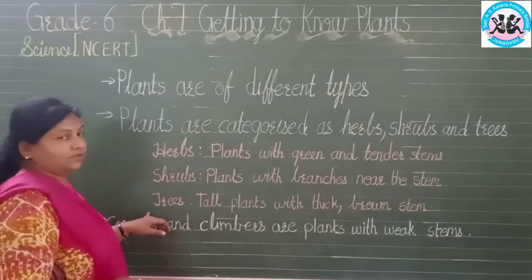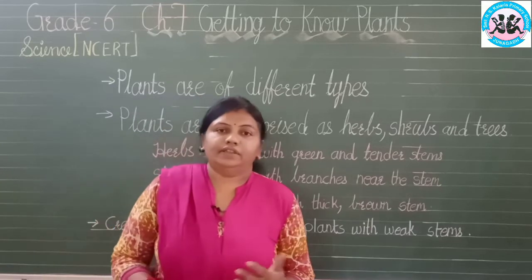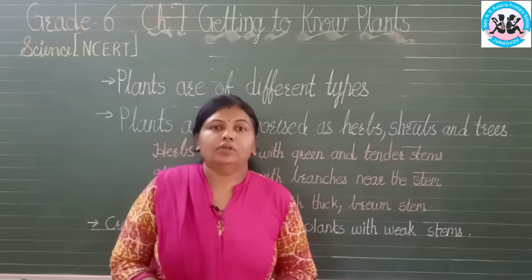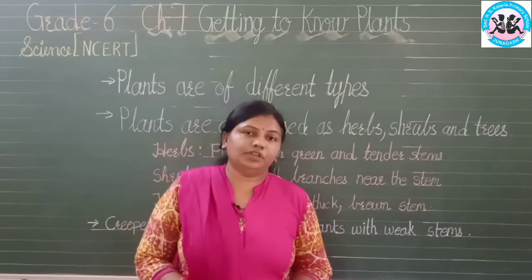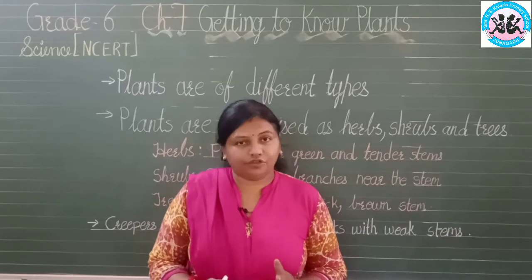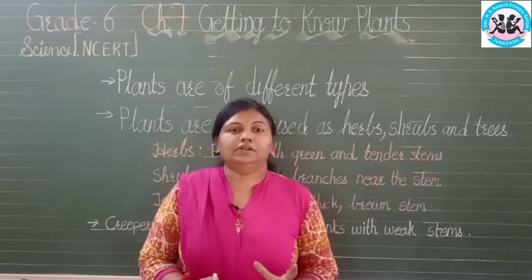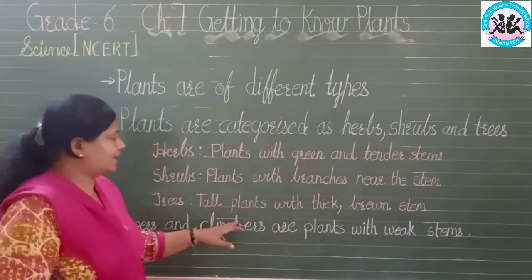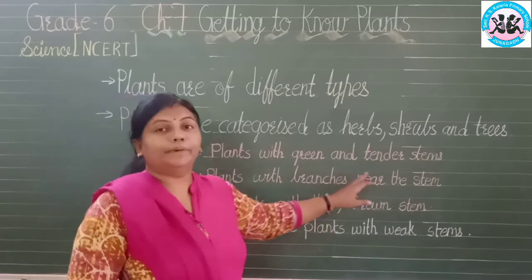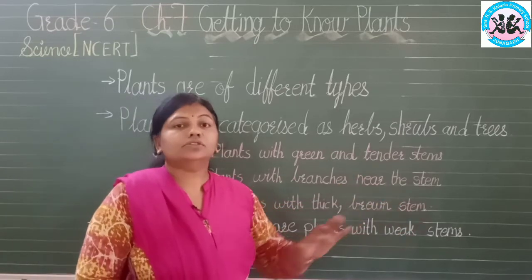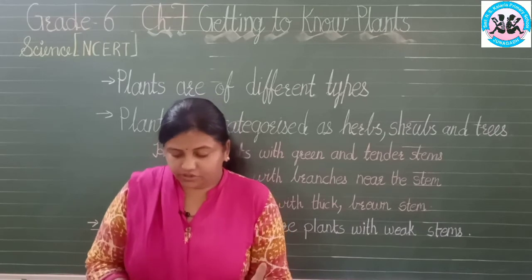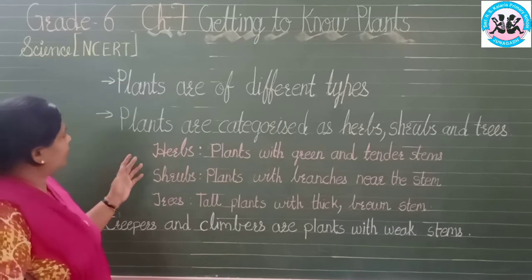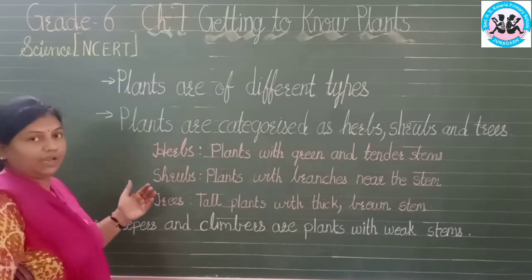Trees — how can you identify trees? Mango tree, banyan tree — all these are huge and have a very thick stem. Trees are tall plants with thick brown stem. So mainly plants are divided into herbs, shrubs and trees.